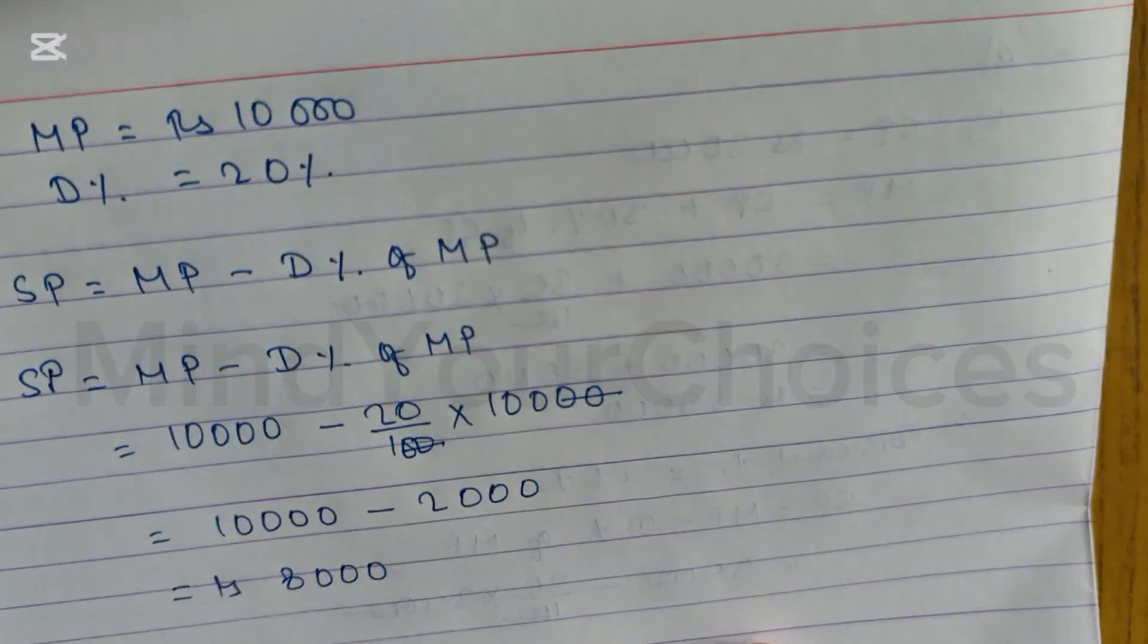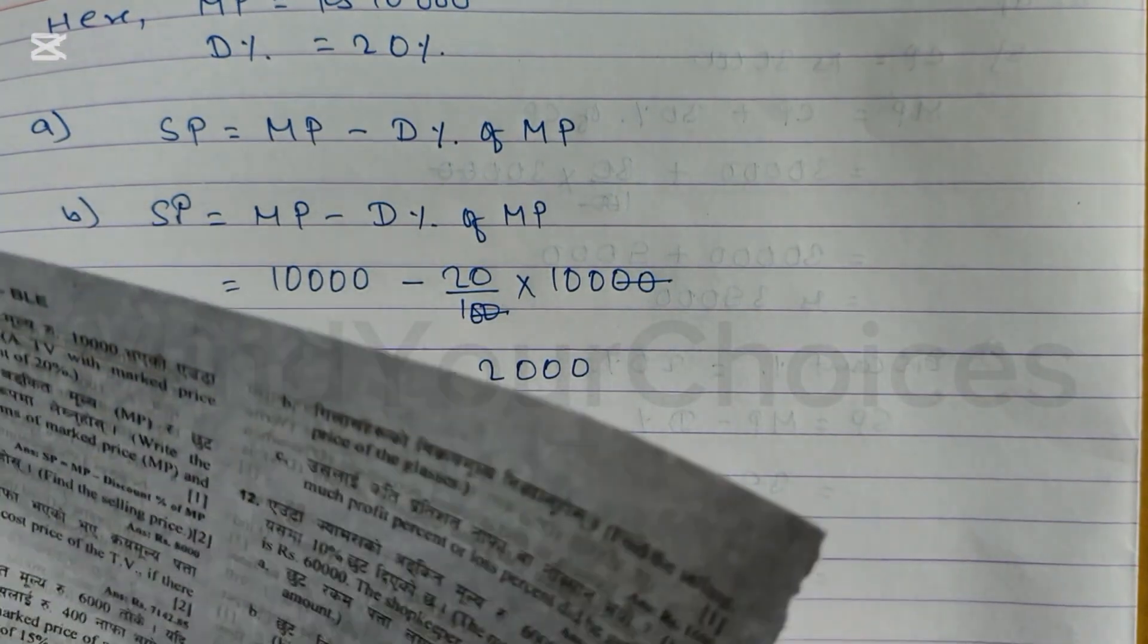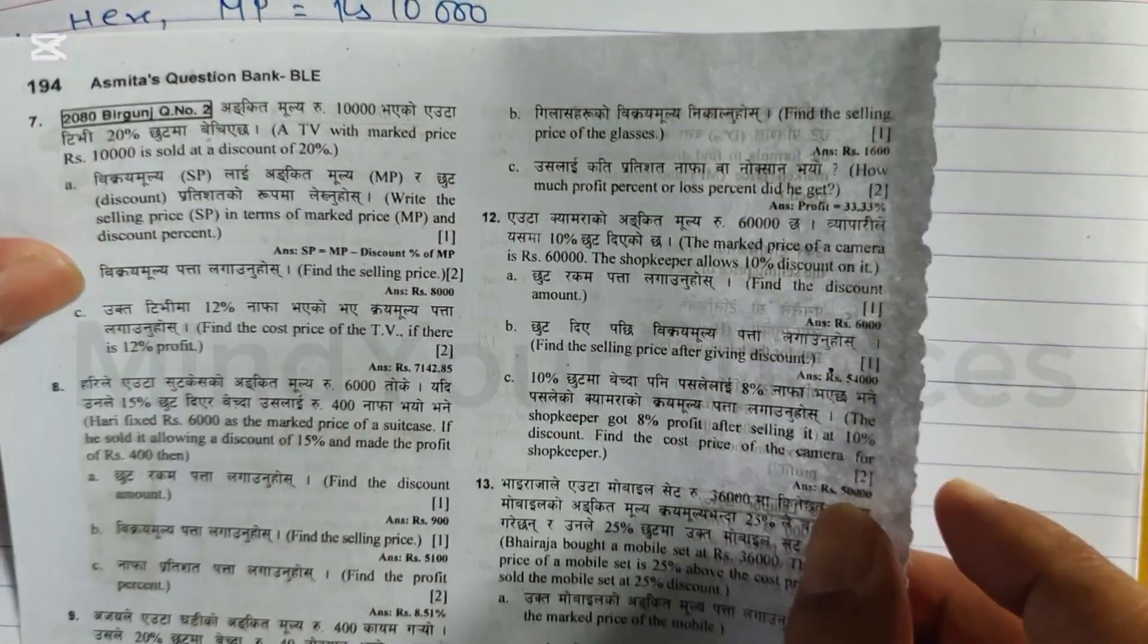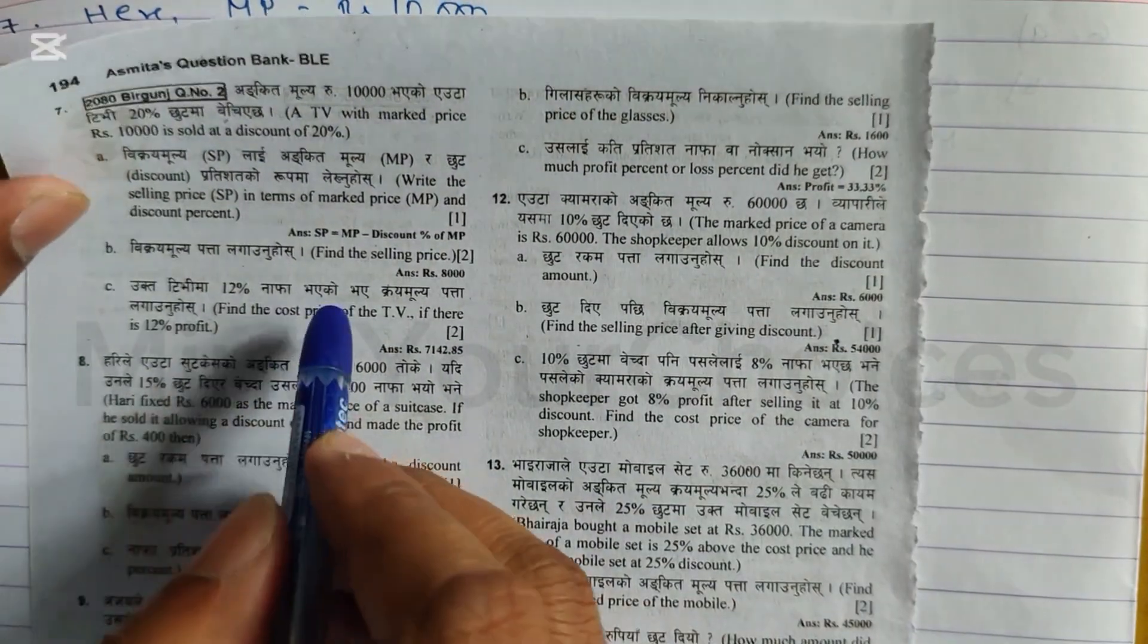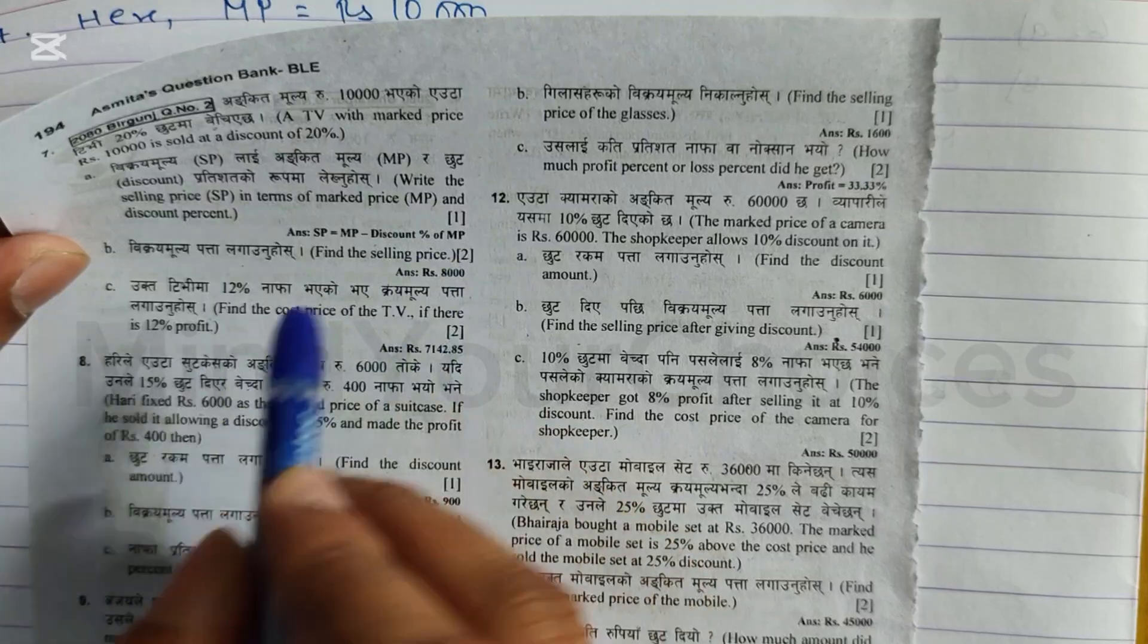So selling price equals 8,000. The selling price is 8,000. That's the answer for Number B. We got the selling price.